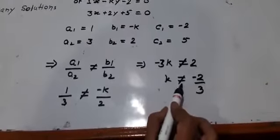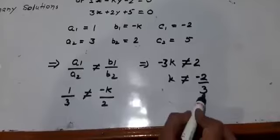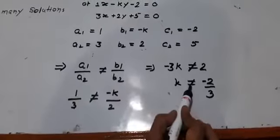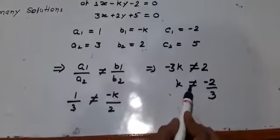So your answer is k not equal to minus 2 upon 3. Now we start with question number 2.